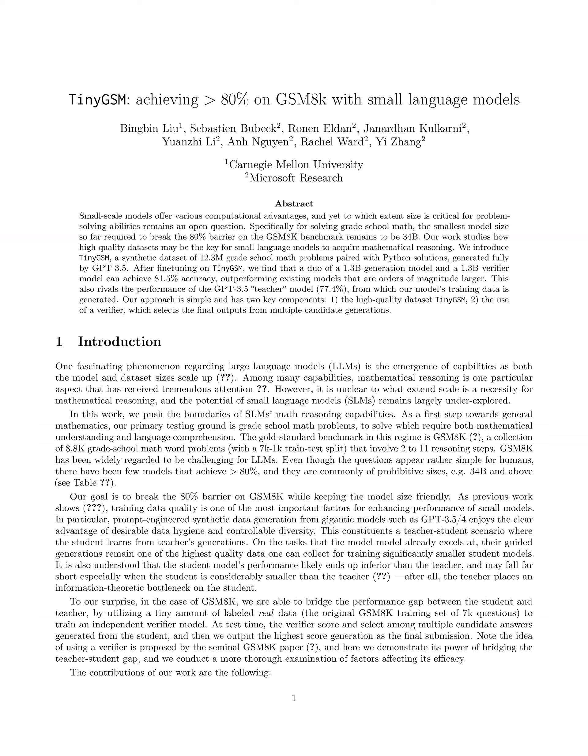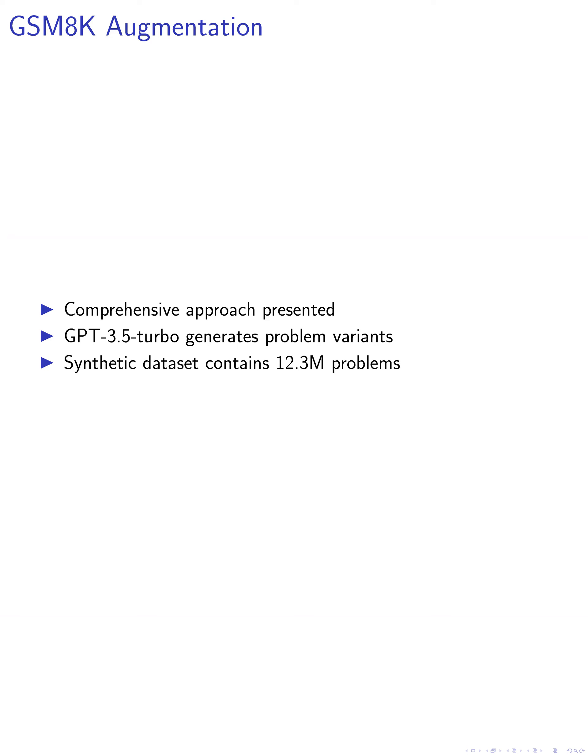In this paper, we present a comprehensive approach to augmenting the GSM-8K training set, which consists of 7,473 problems, with synthetic problems generated by GPT-3.5 Turbo. We prompt GPT-3.5 Turbo to generate problem variants similar to a given question from the GSM-8K training set. Each problem variant contains a question and the corresponding solution written in Python. We also generate synthetic problems with irrelevant information by augmenting the GSM-IC dataset. The resulting synthetic dataset contains 12.3 million problems, each consisting of a question-solution pair.